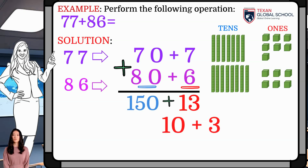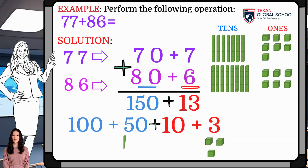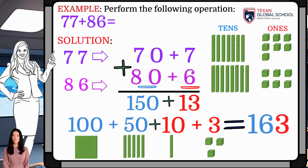They can be added directly. However, 13 can be decomposed into 3 1s and a 10, and 150 into 5 10s and 100. Adding 100 plus 50 plus 10 plus 3, thus obtaining 163.